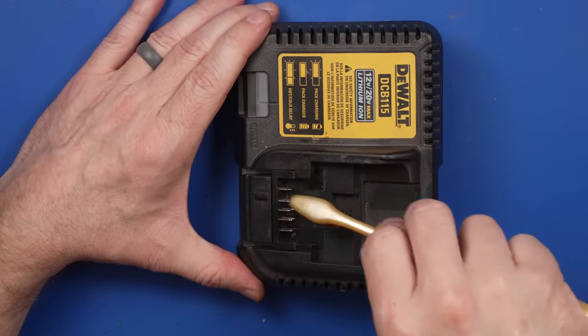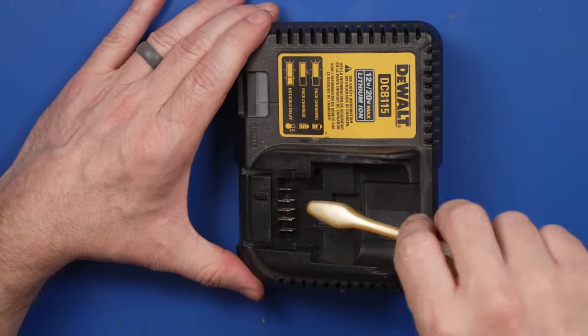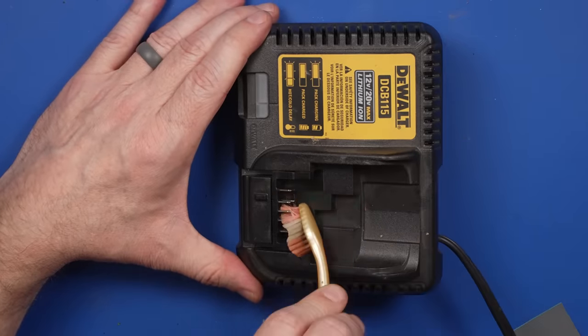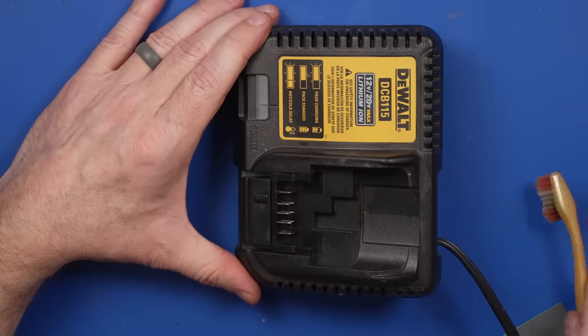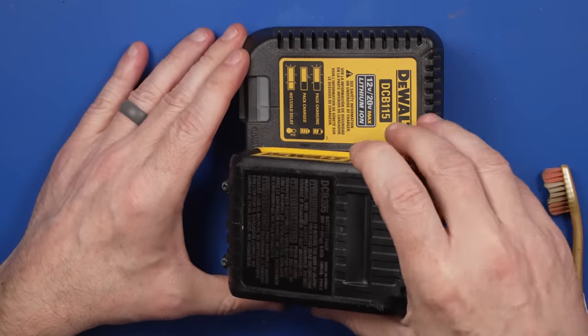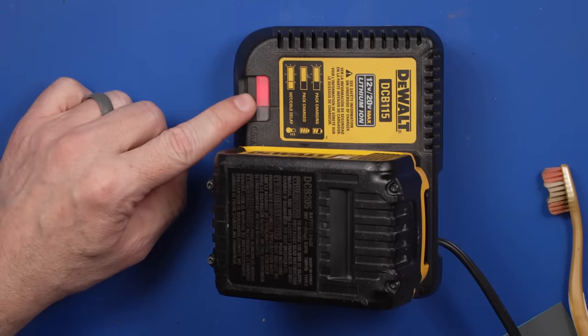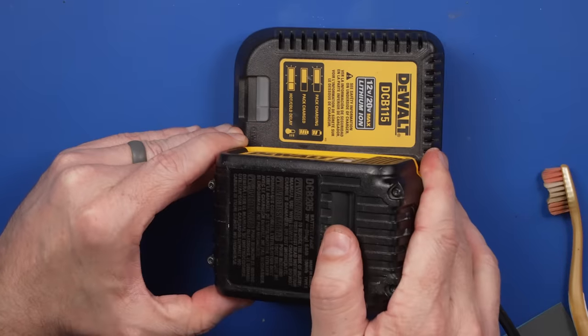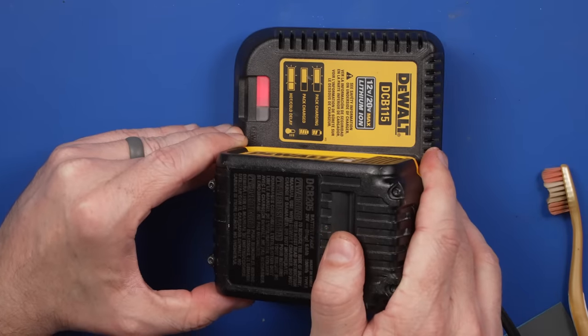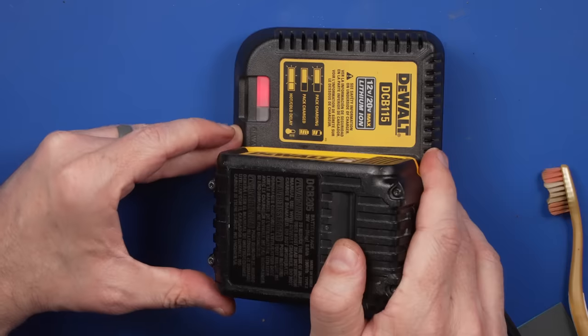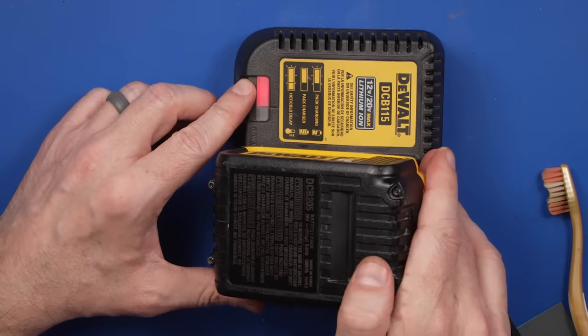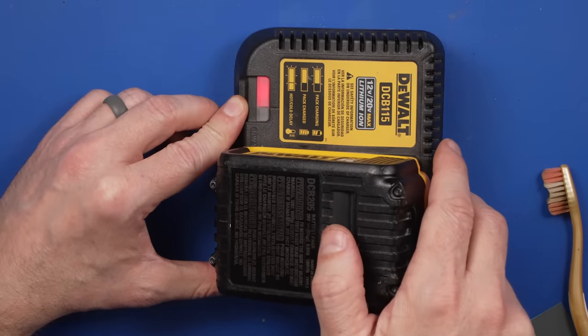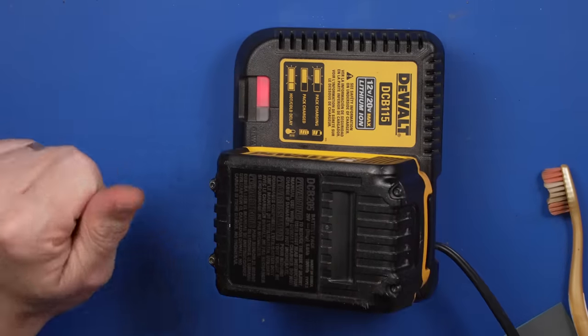And, of course, we have to make sure the charger has nice clean pins too. It doesn't do us any good to clean off all the pins on the pack if the charger is nasty. That looks pretty good. Okay. Here we go. Let's see what happens. Pack charging. Oh, pack charged? I don't know about that. Seems to think it's charged. That might not be good. It'll blink three times and then say it's charged. So, I think what I'll do is leave this on the charger for a little bit. And see if it still says it's charged in a few minutes. Let's look at this Milwaukee one.